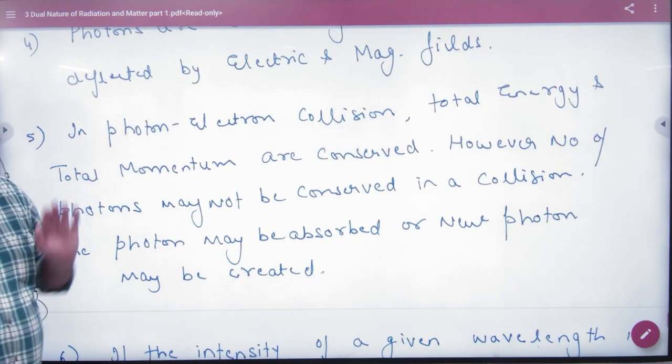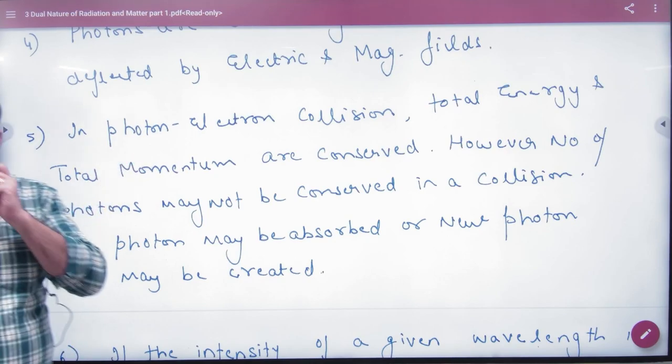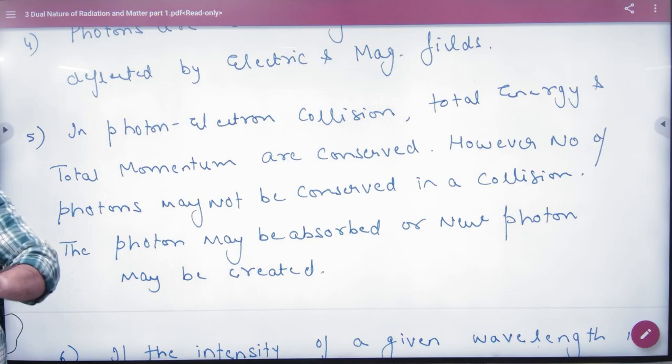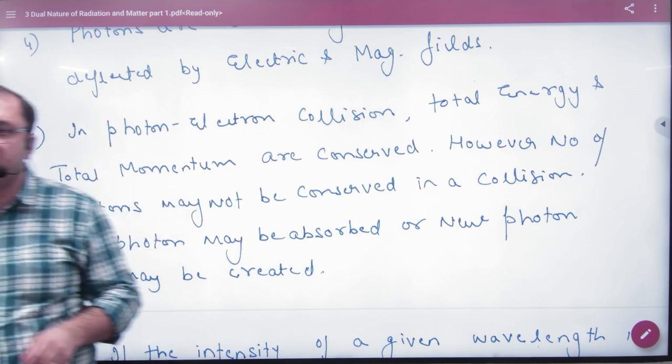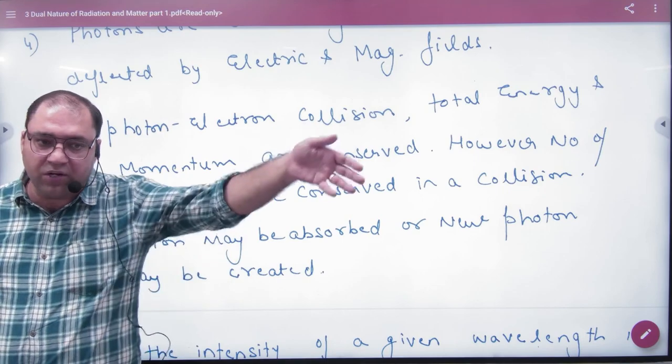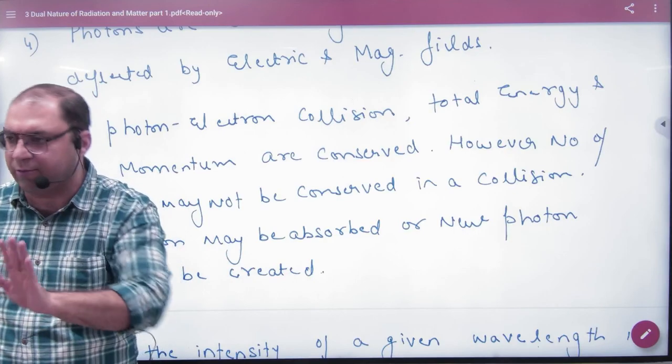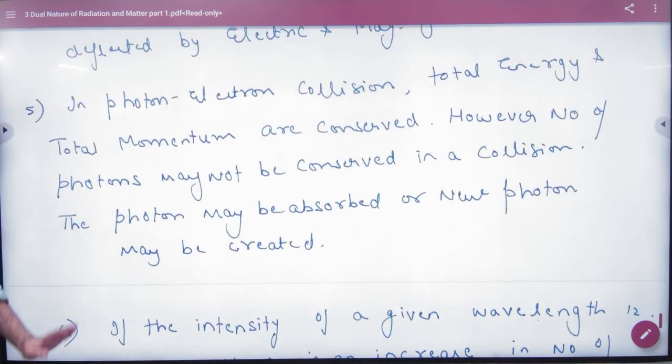Photon-electron collision, total energy and total momentum are conserved. When one photon hits one photon, total energy and momentum are loss. Collision points are conserved. However, number of photons may not be conserved in a collision. Number of photons conserved means that you had 100 photons, but there will be 100 electrons. This is not necessary. The other photons can be lost. So, photon conservation is not the same. And new photons are also created. And some photons are also absorbed.